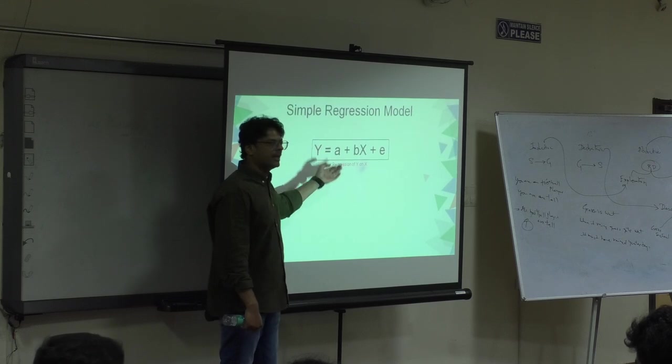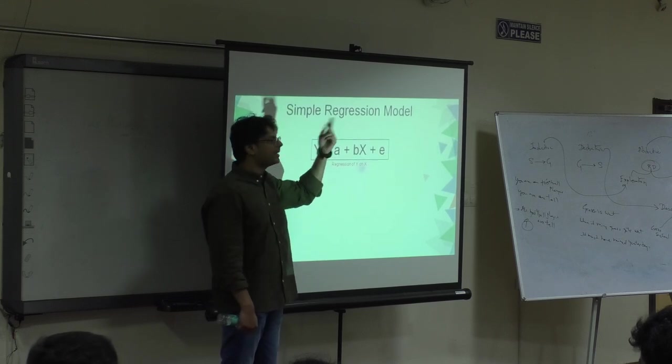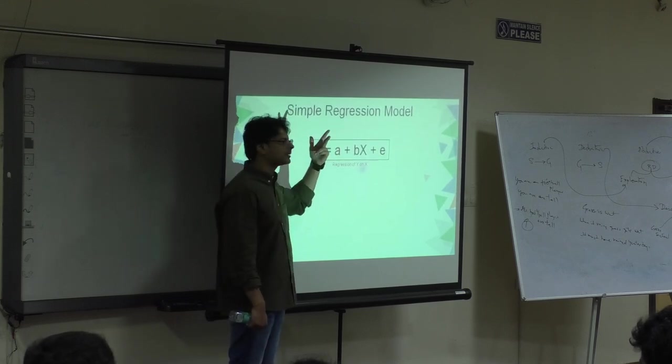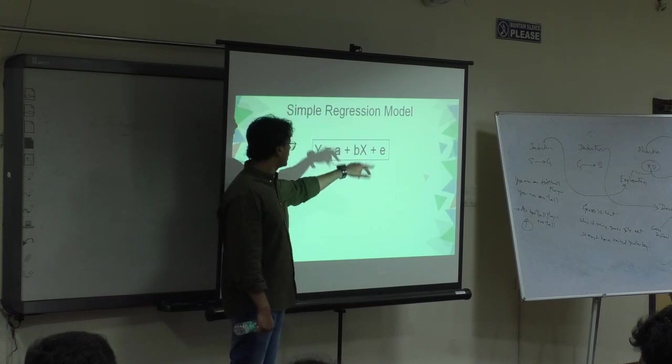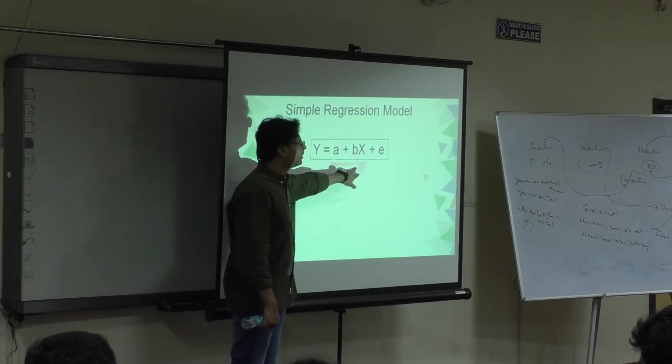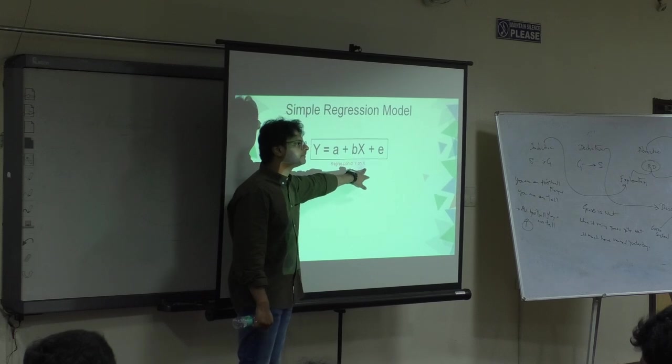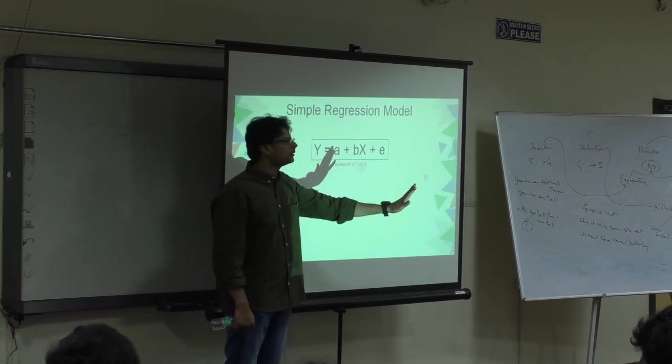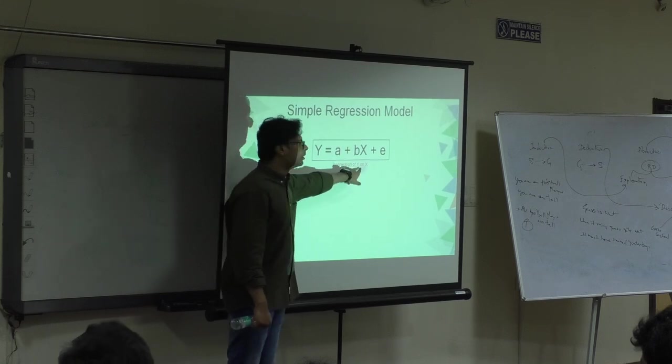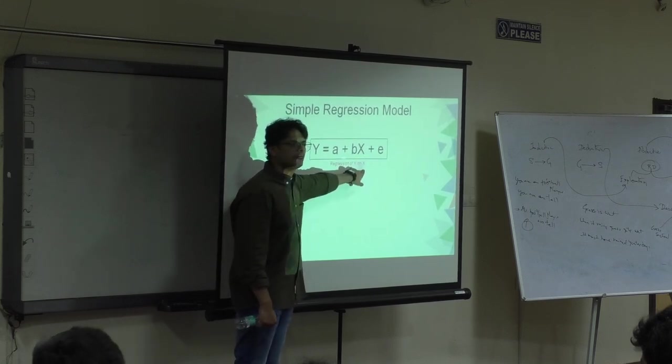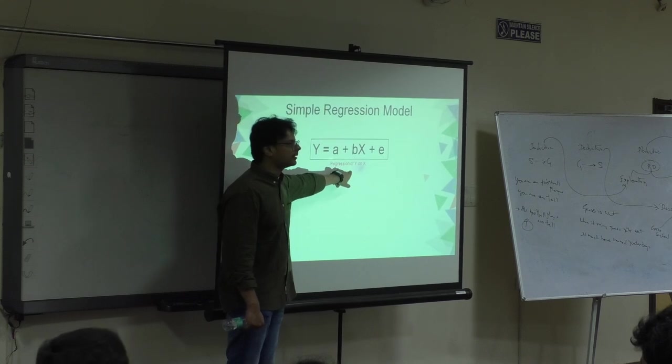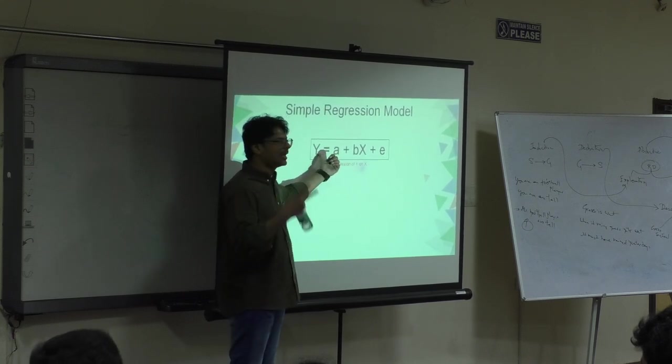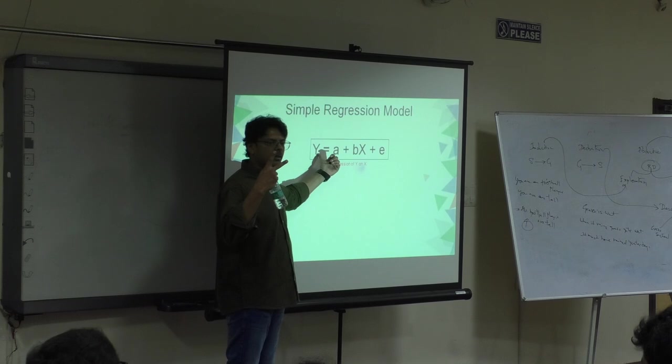Basically in regression you will get two types of lines or two types of equations, where one if this is independent and the other if this is independent. I told you dependent and independent is only based on what is unknown. If you don't know X that becomes your dependent. If you don't know Y that becomes your dependent. And if you differentiate that you will get two lines.